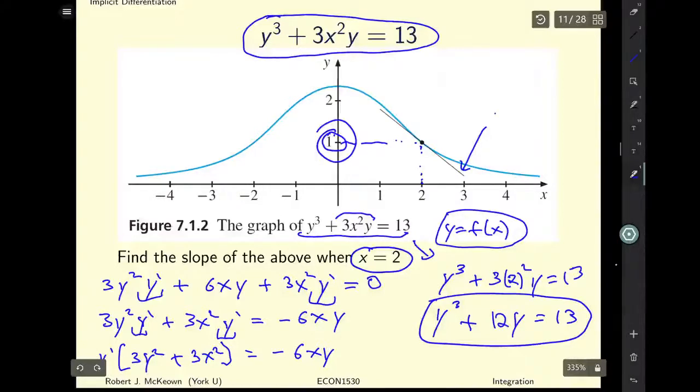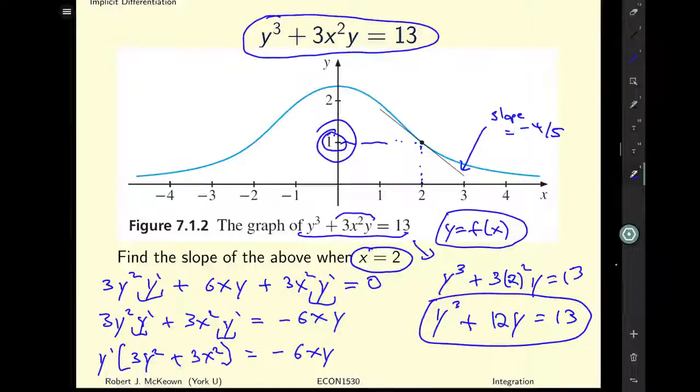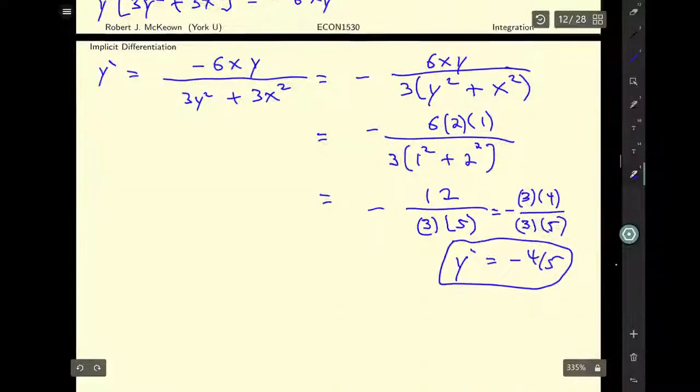And so this line here, this tangent line, has a slope equal to negative 4 over 5. We can see just looking at the diagram that it's downward sloping. And it kind of looks like it is close to a slope of negative 1. Kind of hard to eyeball and see that it's not equal to negative 1. And negative 4 divided by 5, that's pretty close to negative 1. So our answer seems reasonable and we are likely to have found the correct answer.